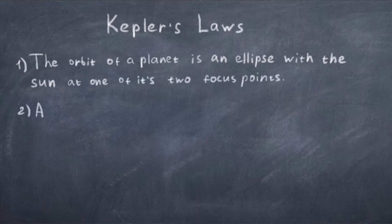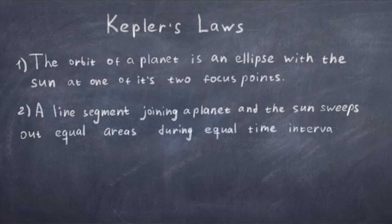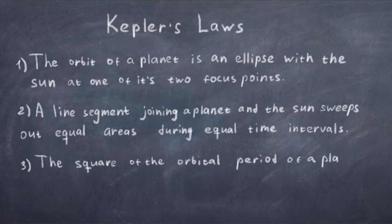Kepler's laws are as follows. The first law says that the orbit of a planet is an ellipse with the sun at one of its two focus points. The second law states that the line segment joining a planet and the sun sweeps out equal areas during equal time intervals. The third law states that the square of the orbital period of a planet is directly proportional to the cube of the semi-major axis of its orbit.